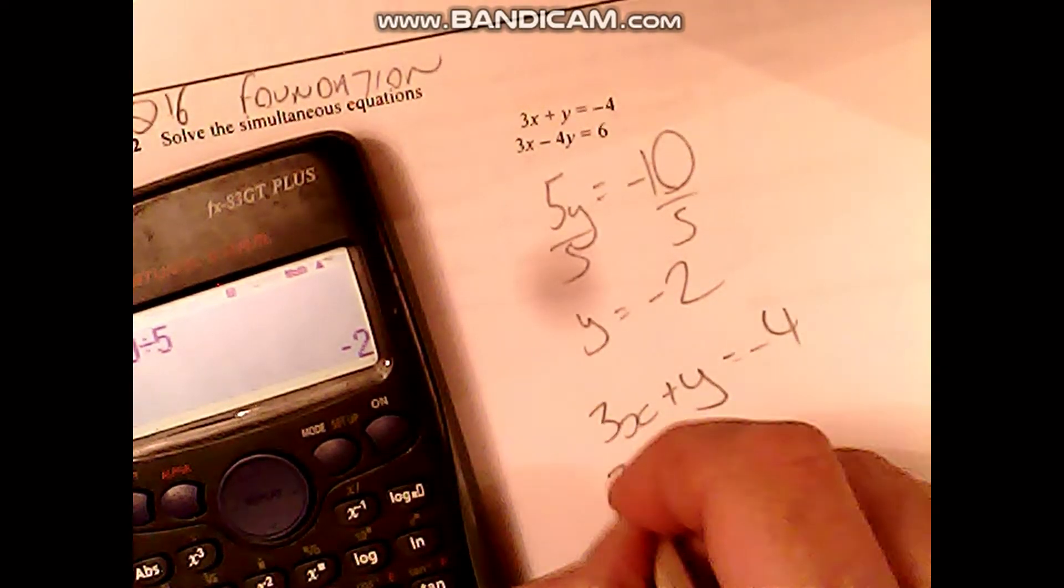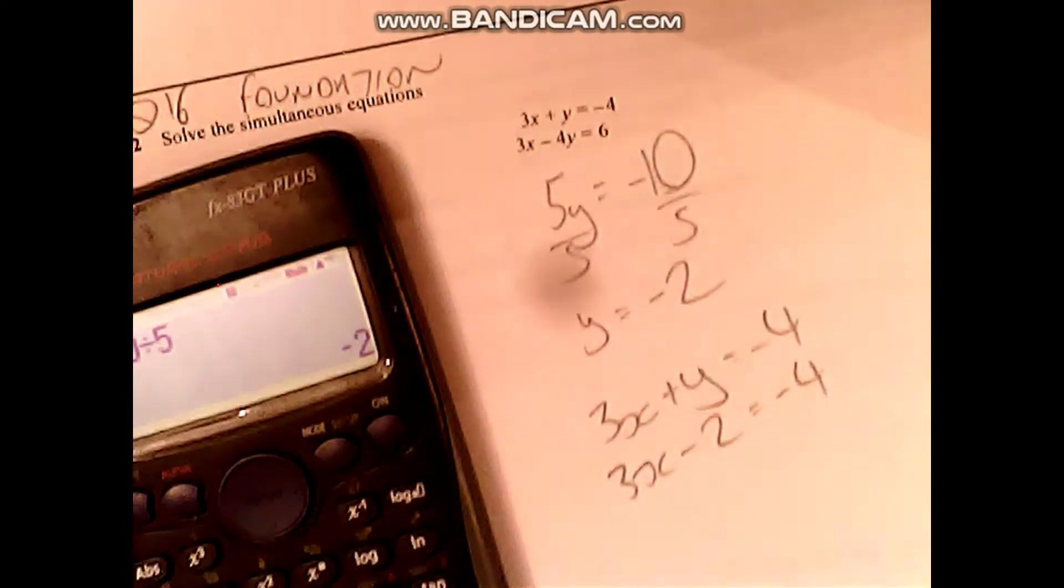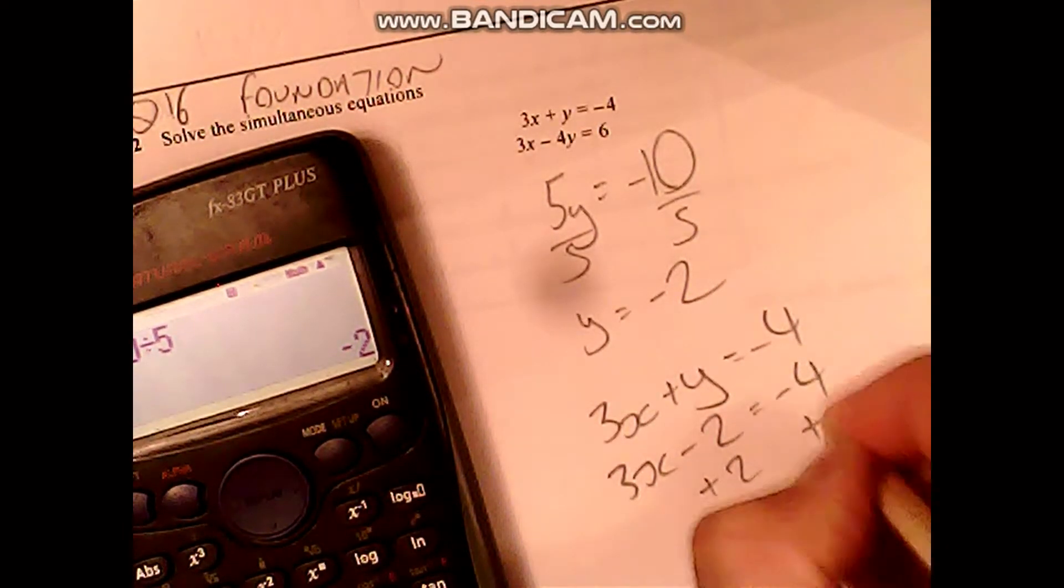Which is minus 4. So 3x plus, or minus 2, equals minus 4. I'll just solve, plus 2, plus 2.